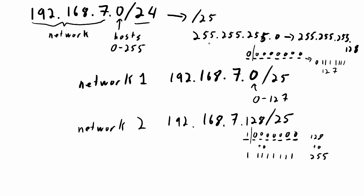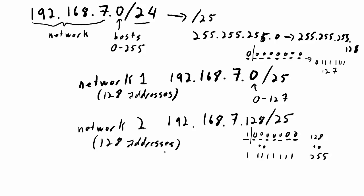In cases where I'm splitting a network in half with a straightforward subnet mask like /24, it's easy — I don't need to examine the subnet mask bits. I can just say this network has 256 hosts going from 0 to 255, split it in half: network one gets addresses 0 to 127, and network two gets addresses 128 up to 255.